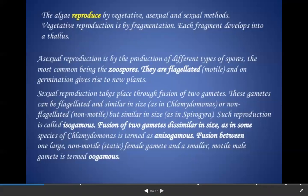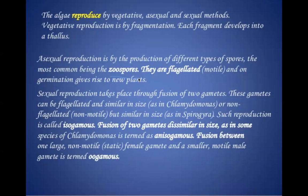Asexual mode of reproduction is very common and takes place through zoospores. Zoospores are flagellated or motile asexual reproducing spores. When they germinate, they give rise to a new individual. So zoospores are asexually reproducing spores that are flagellated.